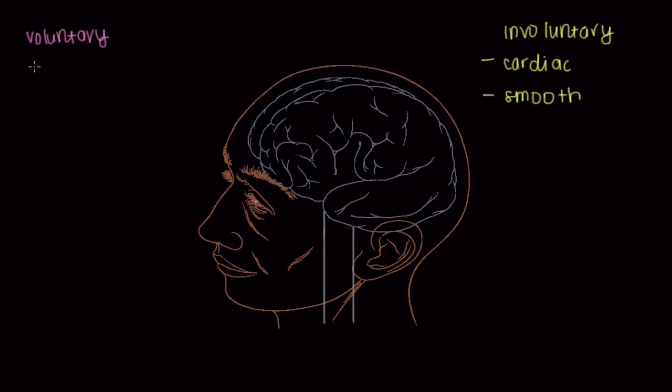What about on the flip side? For voluntary control, which of the three types of muscle do you think is under voluntary control? Well, if you said skeletal muscle, striated skeletal muscle, you'd be absolutely correct.